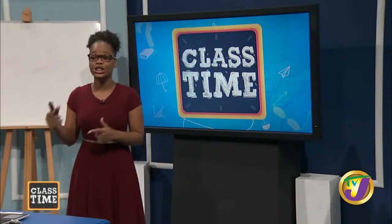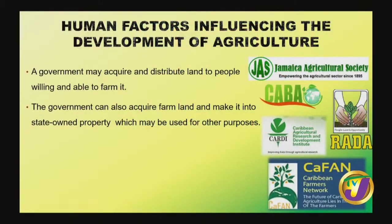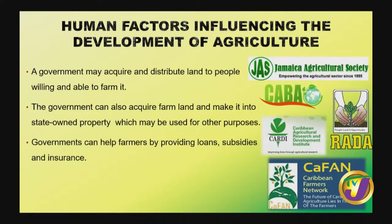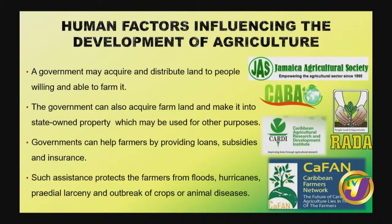The government may also take away farmlands for commercial development or tourism-related activities. It may redistribute new lands available for farming activities. Such assistance helps secure the plots afforded to farmers, and also protects them from natural hazards and disasters such as hurricanes, flooding, windstorms, as well as crop and plant diseases.